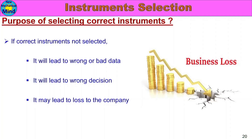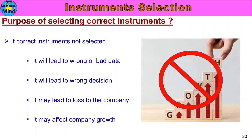If wrong data is produced, the customer may detect the defect, which could affect company growth and reputation. In the worst case, the company may have to shut down. Therefore, selecting the correct instrument for measurement is very important. This concludes the instruments selection part 2 video. Please like, share, and subscribe to the channel, and press the bell icon for notifications. Thank you.